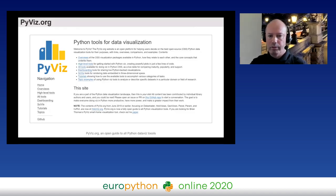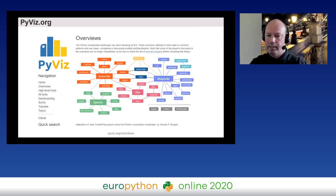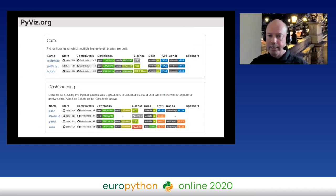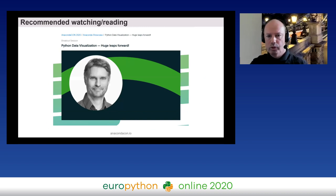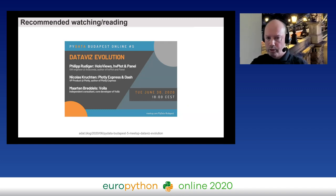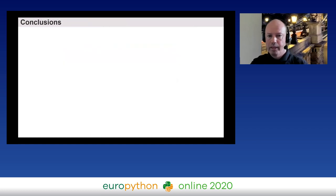I want to mention the pyviz.org website, which is an open guide to all Python data visualization tools. Since I couldn't cover everything due to time constraints, pyviz.org covers much more, with statistics on libraries such as Matplotlib — showing number of stars, contributors, and download numbers. There was also a good talk at the Anaconda conference in June I'd recommend watching for a more advanced look at the Python visualization landscape.